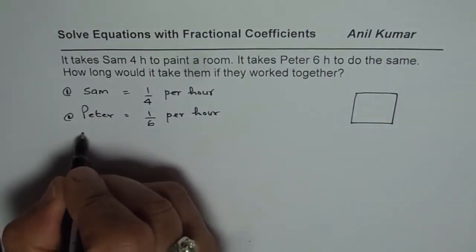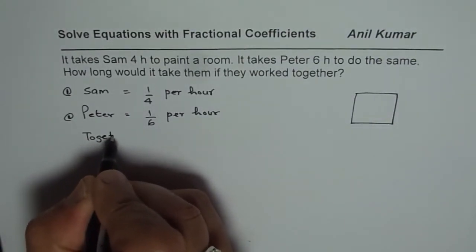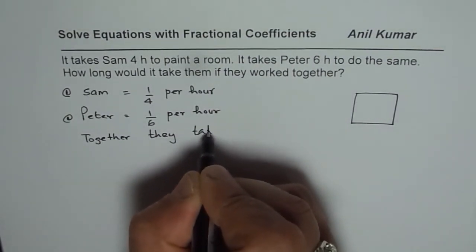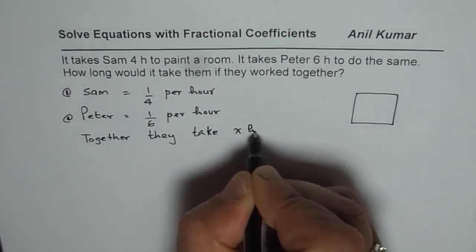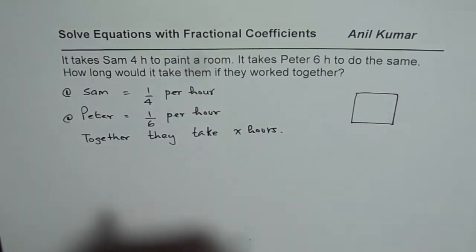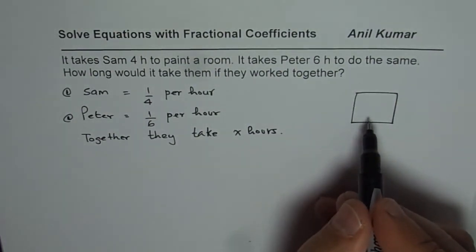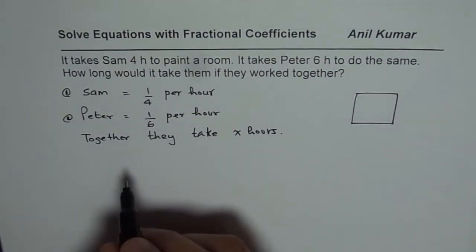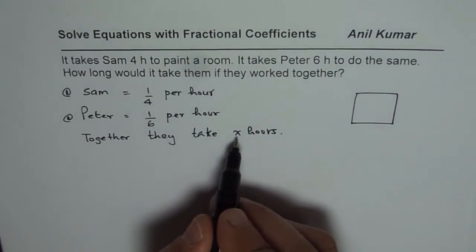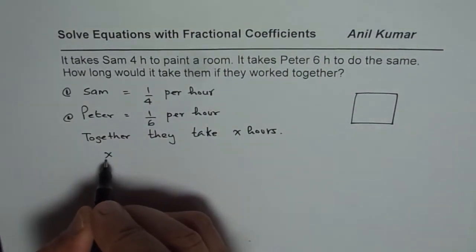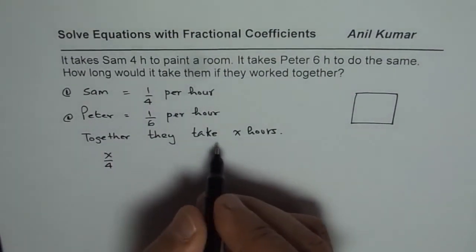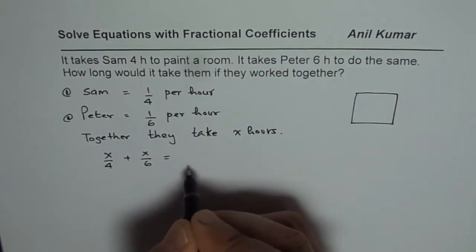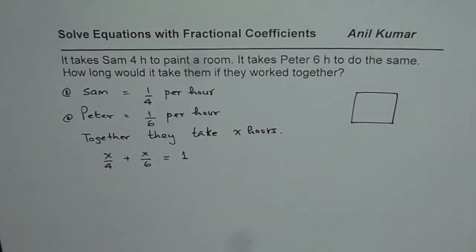Now together, let's say they take x hours. In that case, one full job is done. How much will Peter do and how much will Sam do, that is what we need to figure out. So in x hours, the job done by Sam will be x over four. For Peter, it will be x times one over six, which is x over six. And the job done is one full unit, the whole job.